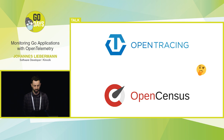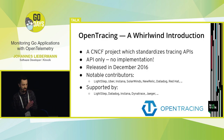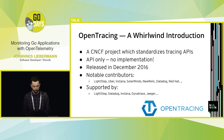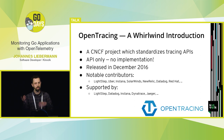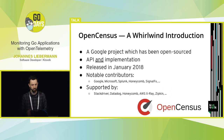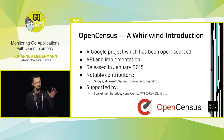OpenTracing is a CNCF project which standardizes the tracing APIs. It does not contain an implementation — it just standardizes the APIs. It was released December 2016, and notable contributors include LightStep, Uber, Instana, SolarWinds, New Relic. It's supported by multiple tracing backends. OpenCensus is a Google project which has been open sourced. It contains an implementation, unlike OpenTracing, released a little later, with contributions from Google, Microsoft, Splunk, and others. It's supported by a bunch of other tracing backends, sometimes with overlap with OpenTracing.